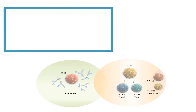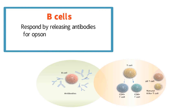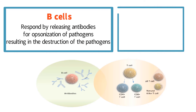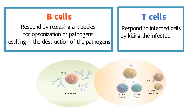To summarize adaptive immunity: B cells respond by releasing antibodies for opsonization of pathogens, resulting in the destruction of the pathogens. T cells respond to infected cells by killing the infected cells.